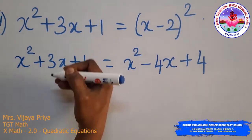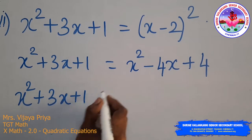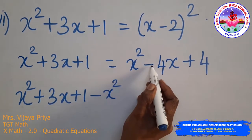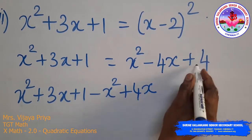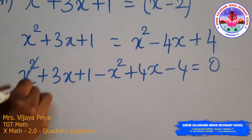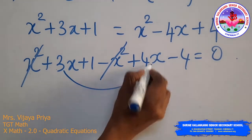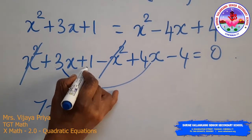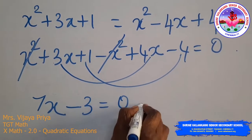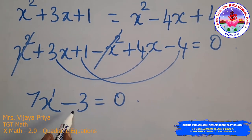Bringing all RHS terms to the left: x² + 3x + 1 − x² + 4x − 4 = 0. The x² terms cancel, and we get 7x − 3 = 0. Since the variable has power 1, it is not a quadratic equation.